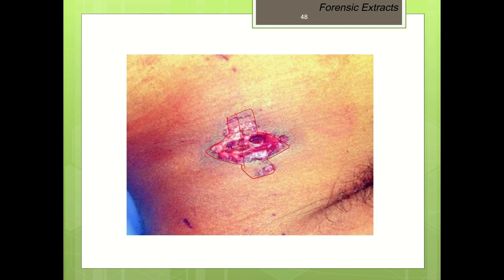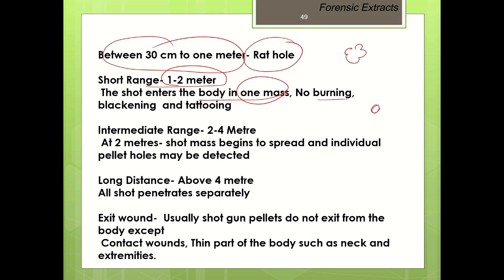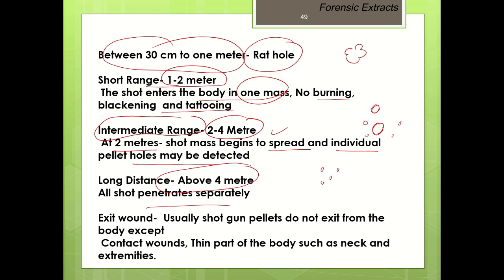Between 30 cm and 1 meter, rat hole formation is seen. At short range between 1 to 2 meters, shot enters the body in one mass without any burning, blackening, or tattooing. At intermediate range between 2 to 4 meters, the shot mass begins to spread and individual pellet holes may be detected. Above 4 meters, each shot penetrates separately. Regarding exit wounds in shotgun cases, pellets usually don't have enough energy to exit, but exit wounds may occur in contact wounds or on thin body parts such as the neck or extremities.